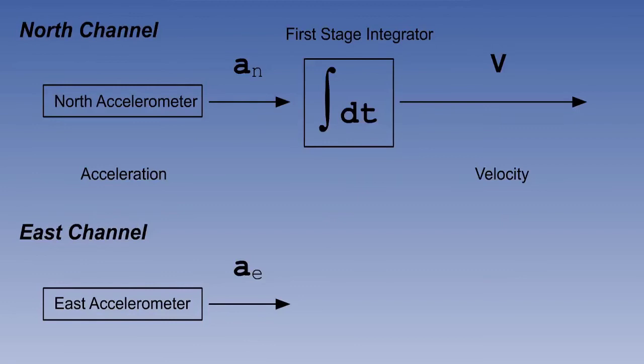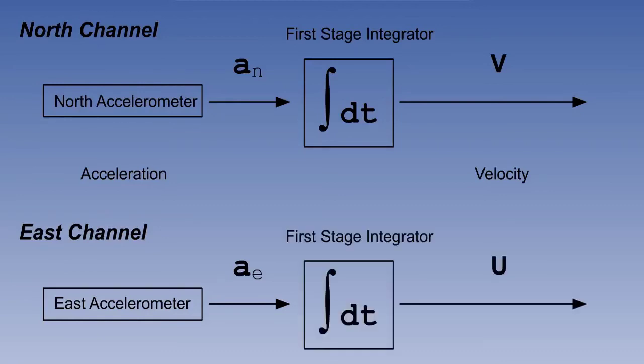The northerly acceleration passes through the first stage integrator, where it is integrated into velocity northwards, V. You might think that if we have used the convention A subscript N for northerly accelerations, to be consistent we should use V subscript N for northerly velocities, but we don't. In navigation, V on its own usually means northerly velocity, and U on its own means easterly velocity. It is a widely used convention. The easterly acceleration is converted by its integrator into velocity eastwards, or U.